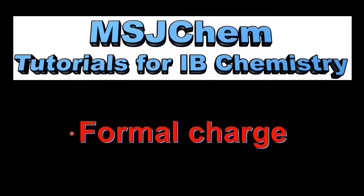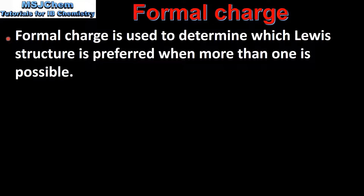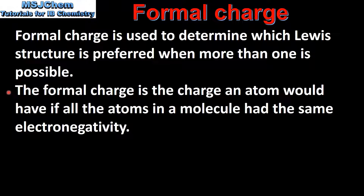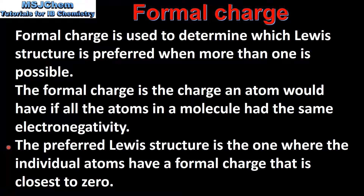This is MSJChem. In this video I will be looking at formal charge. Formal charge is used to determine which Lewis structure is preferred when more than one is possible. The formal charge is the charge an atom would have if all the atoms in a molecule had the same electronegativity. The preferred Lewis structure is the one where the individual atoms have a formal charge that is closest to zero.